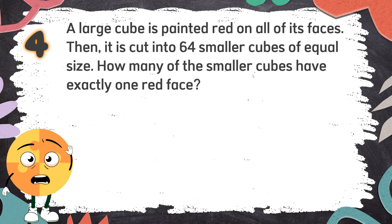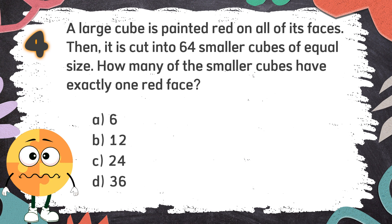Number 4: A large cube is painted red on all of its faces, then it is cut into 64 smaller cubes of equal size. How many of the smaller cubes have exactly one red face? The choices are: A. 6, B. 12, C. 24, D. 36.